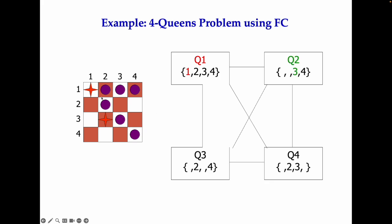Now we go to Q2, which is left with only rows 3 and 4. If we try Q2 at row 3, we check the impact on queen 3 and queen 4. Row 2 and row 4 are removed from queen 3 due to row and diagonal constraints. For queen 4, one additional option is also blocked. We reach a dead end because no value is left for Q3, so we have to backtrack — queen 2 cannot be in row 3.